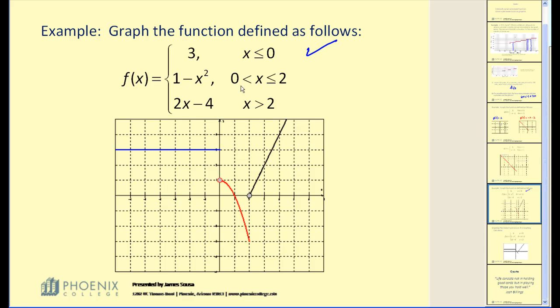The next piece, we want the function f of x equals 1 minus x squared. Remember that's a parabola, but we only want a small piece of it, from 0 to 2, not including 0 but including 2. Notice how we have an open circle when x is 0, and we could put a closed point where x is 2. I think I'll do that, just to emphasize that.